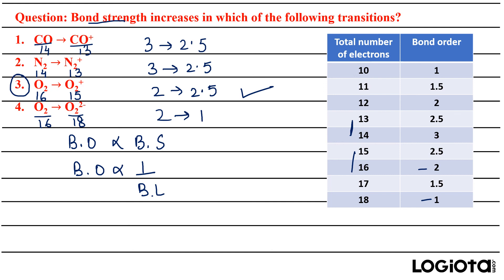Remember, this trick is only for diatomic molecules or ions. If you want to know how to calculate bond order for resonating structures, there is a trick for that too — comment below and I'll make a video for that.